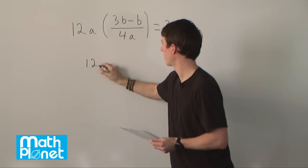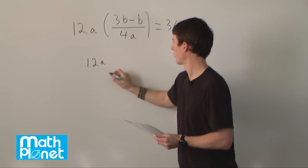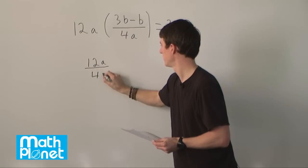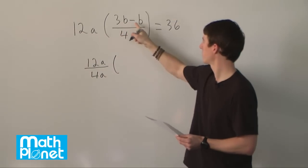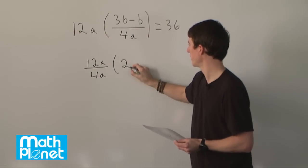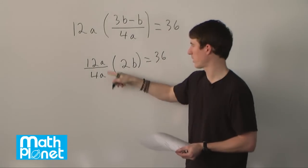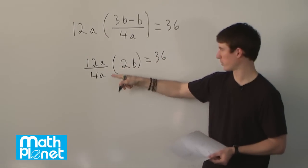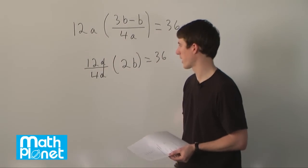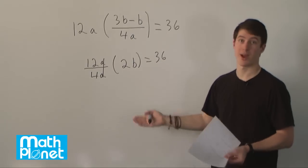So we still have this 12a, but we can just pull this 4a out and then this simplifies to just 2b. And we can see, we did have two variables but these a's are just going to cancel like that, so they're gone anyway, so we don't know anything about a.